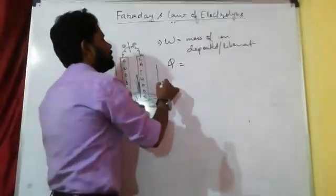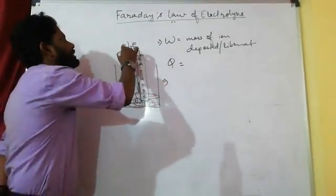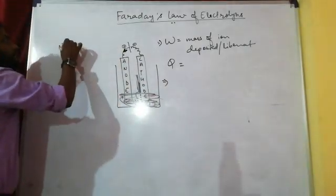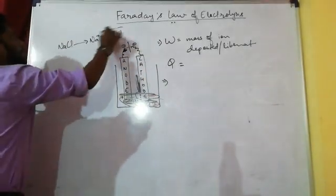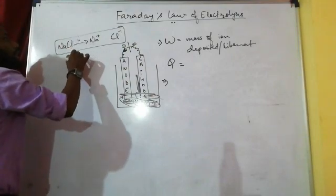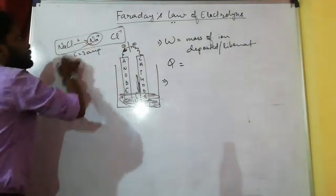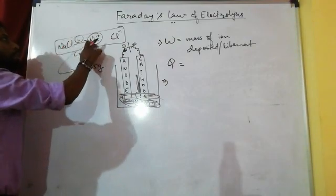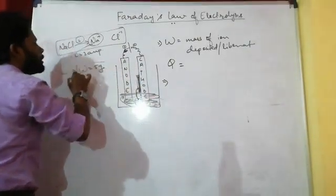So what is Faraday's first law? Consider the electrolysis of NaCl with a current of 2A for 1 minute. Na⁺ and Cl⁻ dissociate, and Na⁺ deposits at the cathode. If 2A current passes for 1 minute, suppose the sodium deposit is 5 grams.